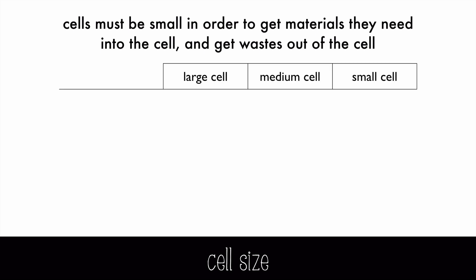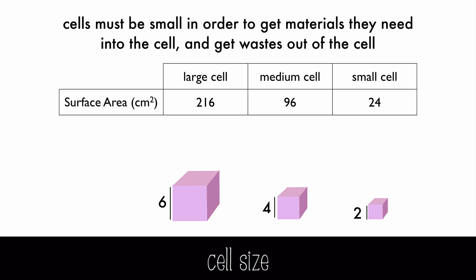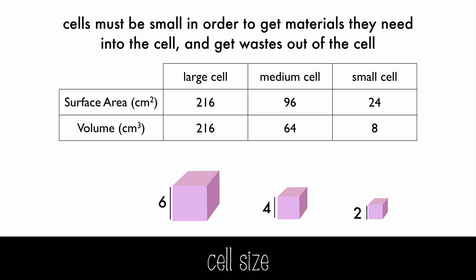Let's compare three different cubes to understand this better. We've got a small, medium, and large cube here. The large has an edge of 6 centimeters, which gives it 216 square centimeters of surface area and 216 cubic centimeters of volume.